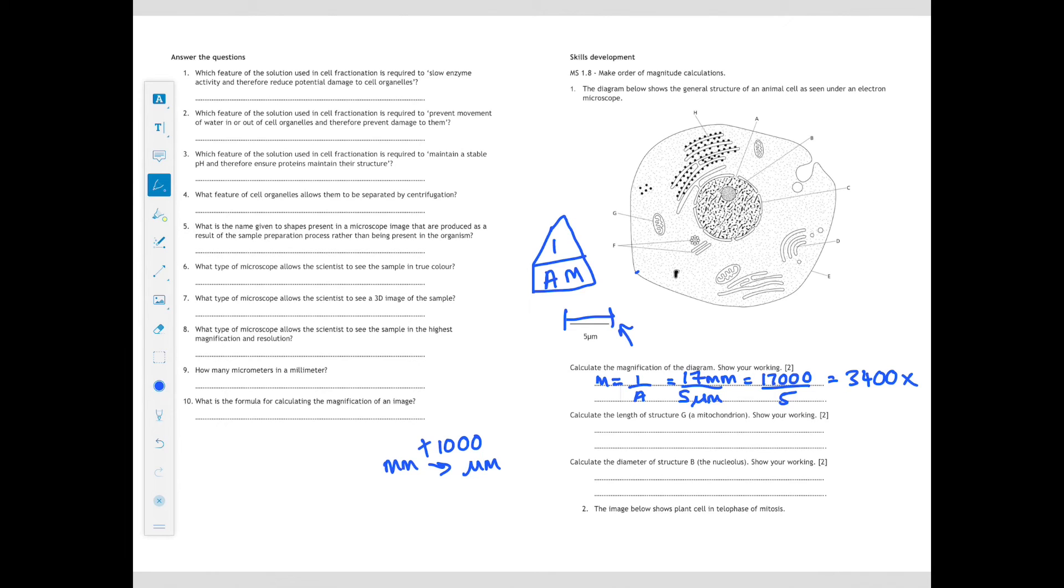Next we're calculating the length of structure G, which is a mitochondria. Show your working. Looking for its actual length, so using our formula triangle, we do image size over magnification. The image size, you're going to use your ruler to measure the length. We find that it is 12 millimeters long. Then we're dividing it by the magnification which we've just calculated is 3,400. The crucial thing here is you must have your units in micrometers. Using our conversion, we're going to times that by a thousand, so it becomes 12,000 divided by 3,400 to become an actual length of 3.53 micrometers. Now we're calculating the diameter of structure B, which is the nucleolus. Use your ruler to measure its diameter in millimeters and that will be eight millimeters. The magnification remains 3,400. Convert eight millimeters to micrometers, do the division, and you get an answer which is 2.35 micrometers.